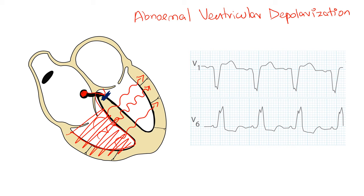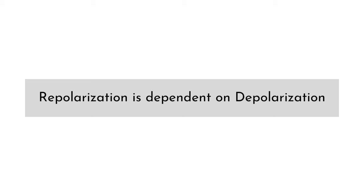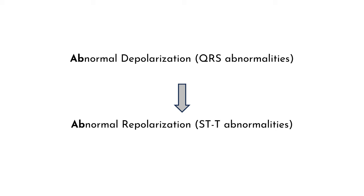On ECG, ventricular depolarization is represented by the QRS. So the ECG findings of LBBB should primarily involve the QRS complex, like widening of the QRS complex, the deep S wave in V1, the broad monophasic R waves in the lateral leads, etc. Which raises the question: why are there changes in the ST segment and in the T waves? This brings us to the second concept: repolarization is dependent on depolarization. This is why in LBBB, in addition to the primary abnormalities of the QRS complex, you also see secondary repolarization abnormalities in the ST segment and T waves.